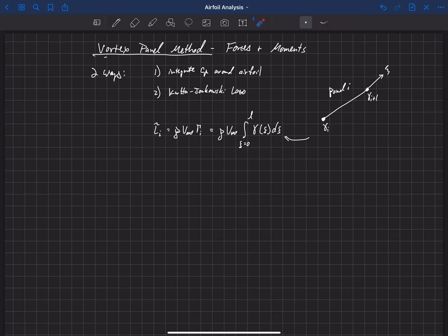Okay, so then the coefficient of lift from that panel is equal to the lift from that panel over one-half rho V infinity squared C, which, when we plug this in here, the rho's will cancel, and one of the V infinities will cancel, and what we're left with is 2 over V infinity C times the integral of xi equals 0 up to L of gamma of xi d xi. Okay, now in our case,